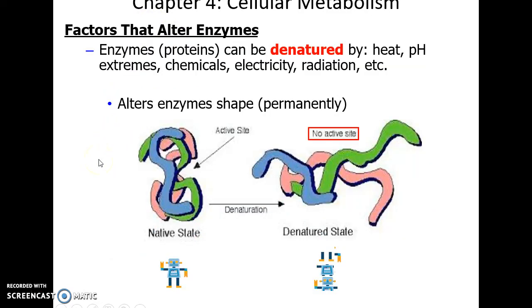Denaturation is when an enzyme's shape is permanently disrupted, causing it to lose its active site. This can be caused by high heat, extreme pH, weird chemicals, electricity, radiation, and so forth.